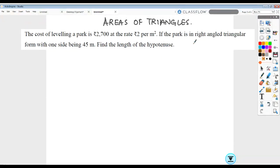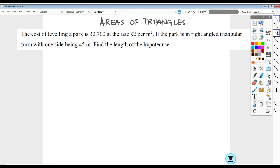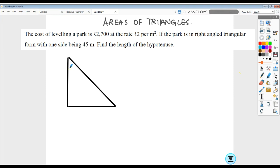If the park is in a right-angled triangular form, that means let me just first draw a right-angled triangle here. This is one of the lengths and this is the other. The longest side of a right-angled triangle is the hypotenuse.